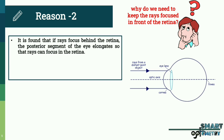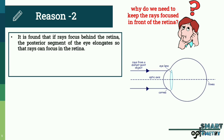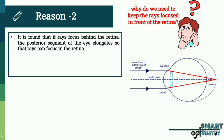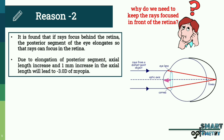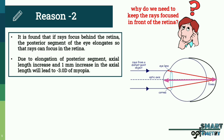Reason number two: it is found that if rays focus behind the retina, the posterior segment of the eye elongates so that rays can focus on the retina. Due to elongation of the posterior segment, axial length increases, and a 1 mm increase in axial length will lead to –3 diopters of myopia.